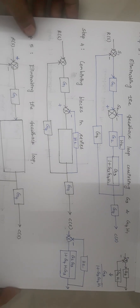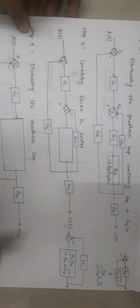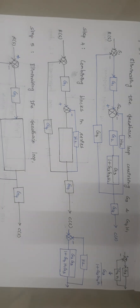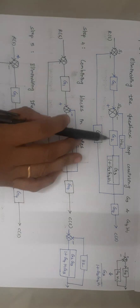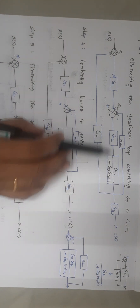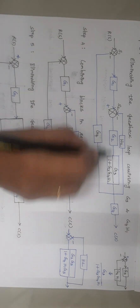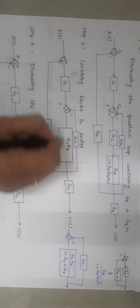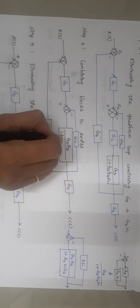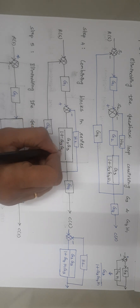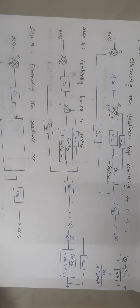The next step is combining the two blocks that are now in series. When these two blocks are in series, we multiply them, giving us G2·G3 divided by (1 + G3·G4·H1).